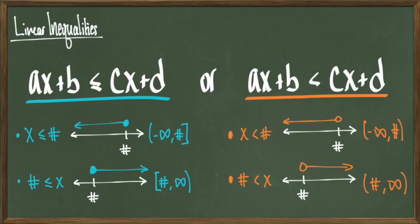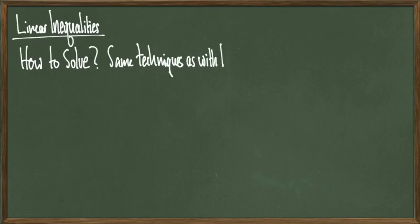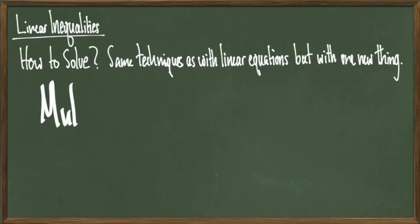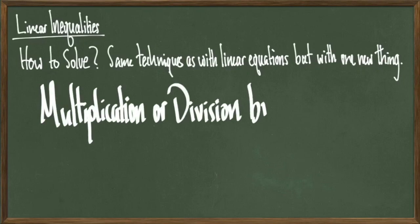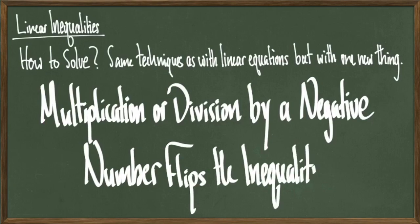At the end of the day, solving linear inequalities is not much different than solving linear equations. We just have different forms for our answers. Those forms look like one of these four intervals. Even though I have been saying that solving linear inequalities is just like solving a linear equation, because we do use the same kind of techniques, we need to add one more thing. Whenever we are multiplying or dividing both sides of our inequalities by a negative number, then the inequality will be flipped.